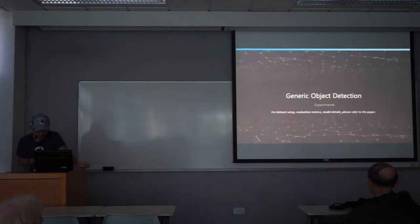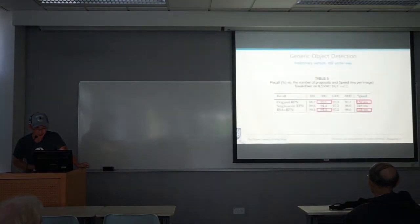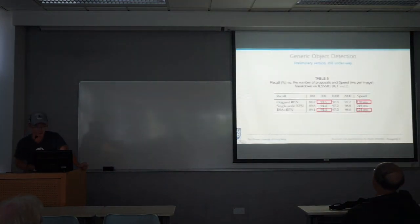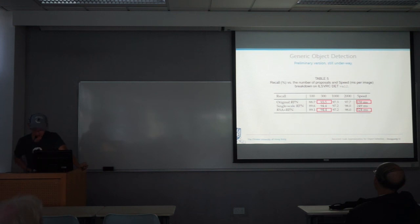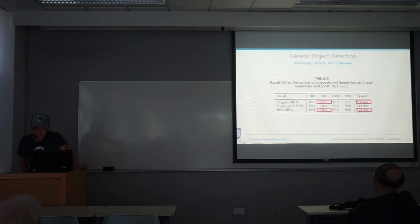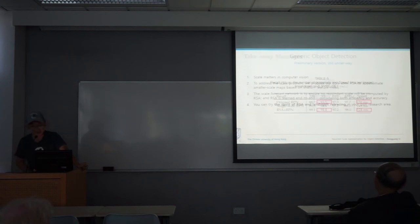For generic object detection, results are still preliminary and underway. On ImageNet with proposals under 300 boxes, the original RPN achieves 93% recall and we achieve slightly better at 94%. For speed, RPN takes 120ms per image and we achieve 150ms per image.